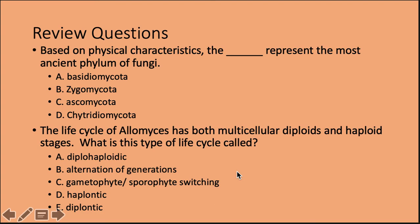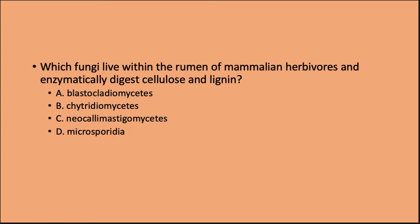Review questions: Based on physical characteristics, the most ancient phylum of fungi is D — Chytridiomycota. The life cycle of Allomyces having both multicellular diploid and haploid stages is called B — alternation of generations. The fungi that live within the rumen of mammalian herbivores and enzymatically digest cellulose and lignin is C — Neocallimastigomycetes.